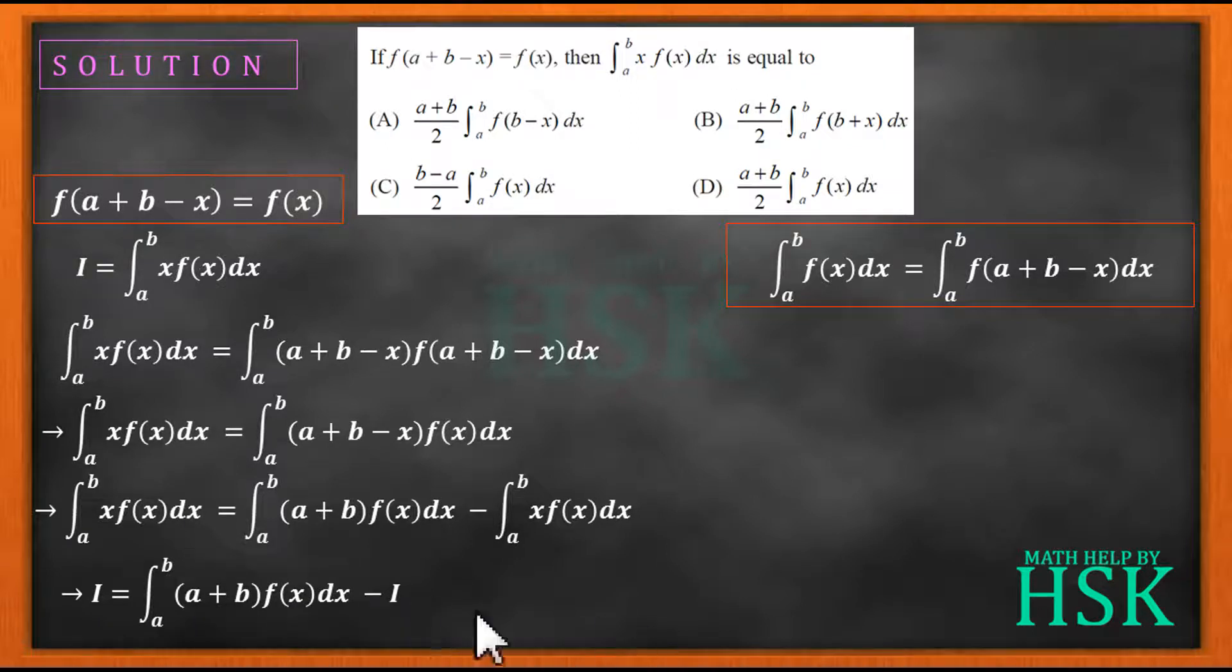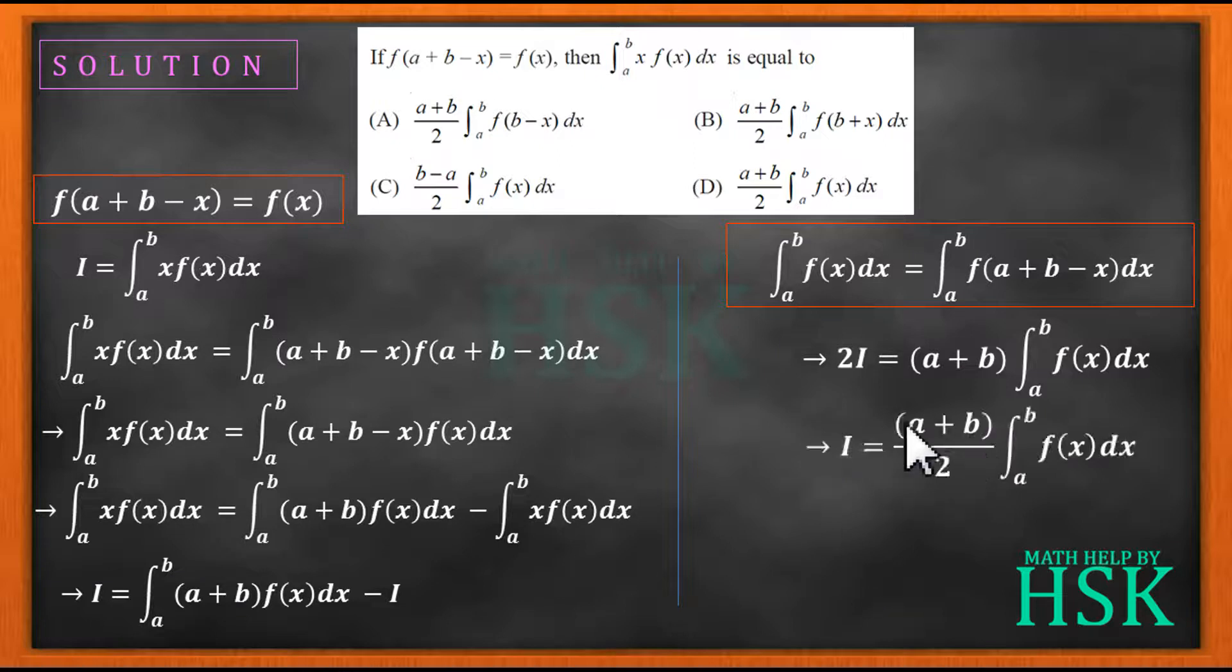This i is going to go there and I can write 2i is equal to (a+b)∫f(x)dx from the limit a to b, or i is equal to (a+b)/2·∫f(x)dx from the limit a to b. Now you can see for yourself that this matches the option number D, so hence we can see that D is the correct option.